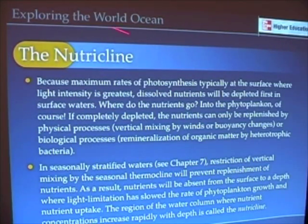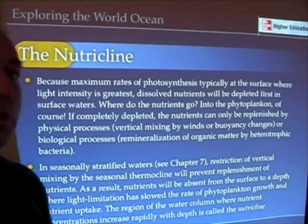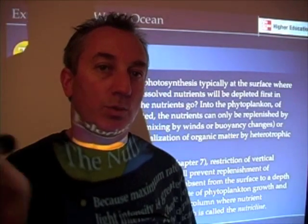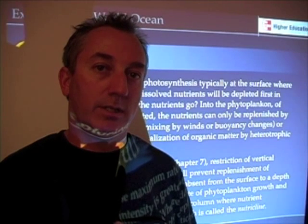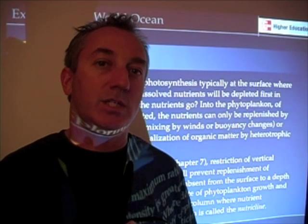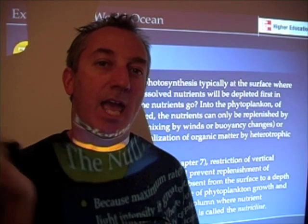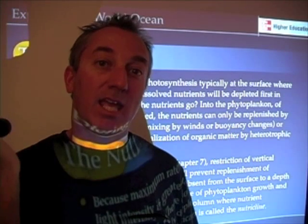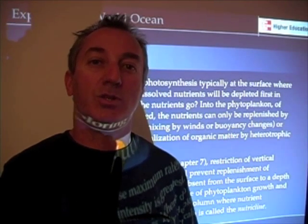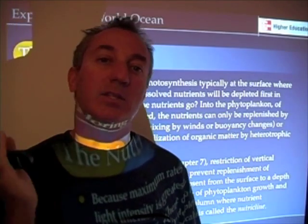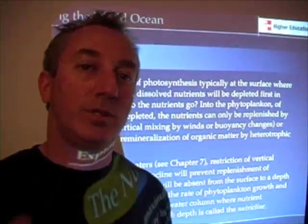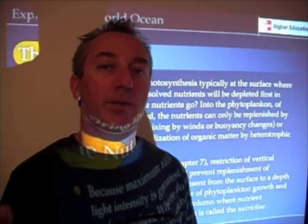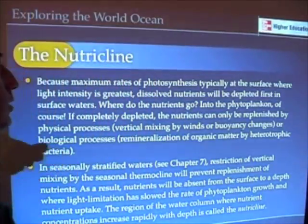I want to talk a little bit about another cline — in this case, what we call the nutricline. Just like a thermocline is a region of rapid change in temperature, and a halocline is a region of rapid change in salinity, and a pycnocline is a region of rapid change in density, a nutricline is a region of rapid change in the concentration of nutrients. In this case, we're going to take a look at nitrate, which is the most common limiting nutrient in the world ocean, although not the only one.